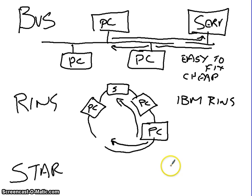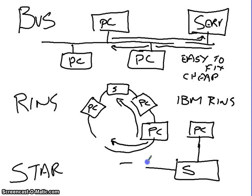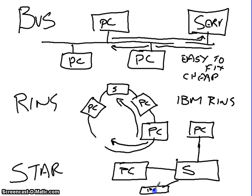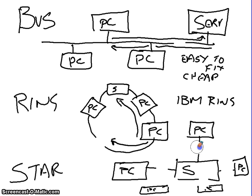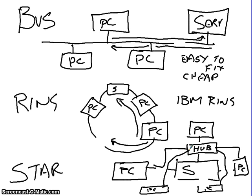The last type, and the one we use most commonly today, is the star network, where you have a server at the central point and every PC is connected to it — which is exactly how every home and every school network works now. Instead of drawing all these lines directly to the server, what we use is a hub or a switch, and that hub then connects all the PCs together. If there is a break, it tends to be fairly easy to fix and it only affects one machine at a time.